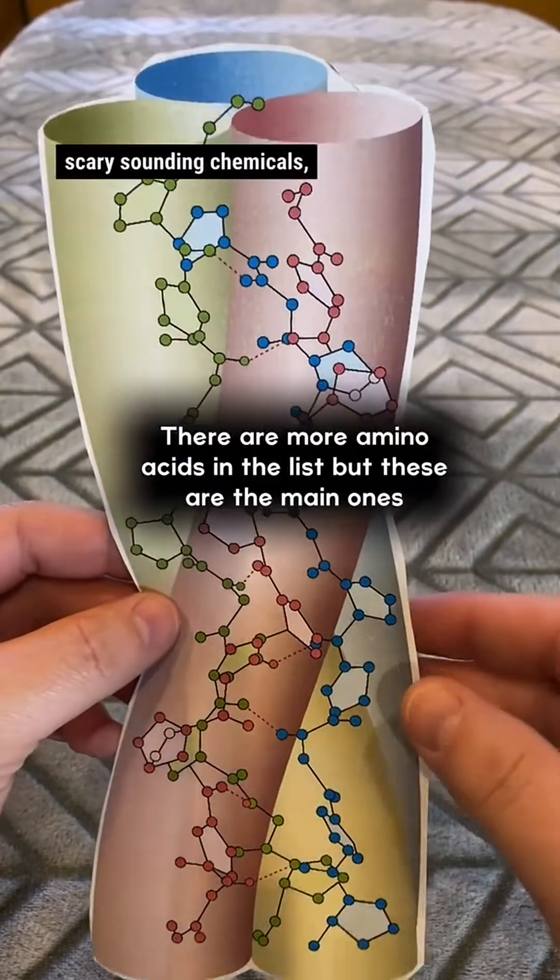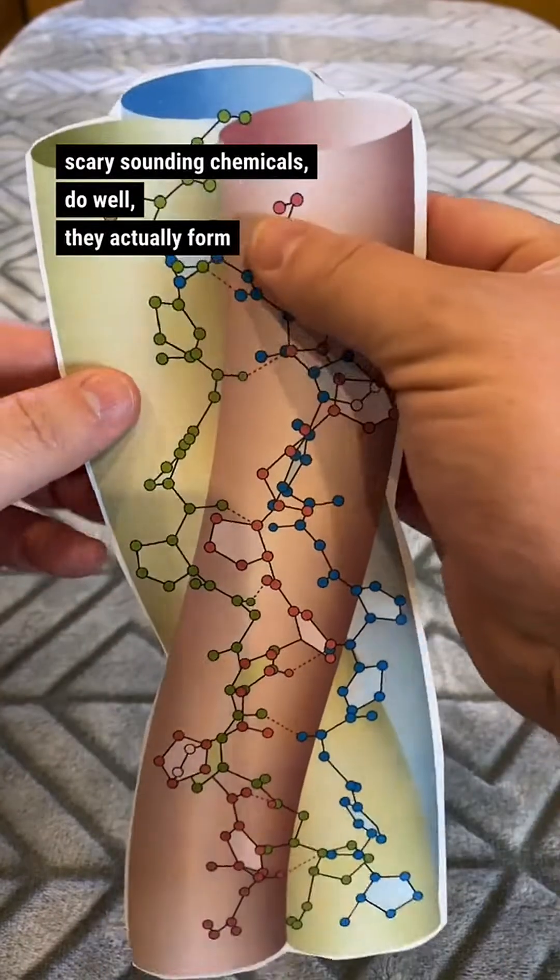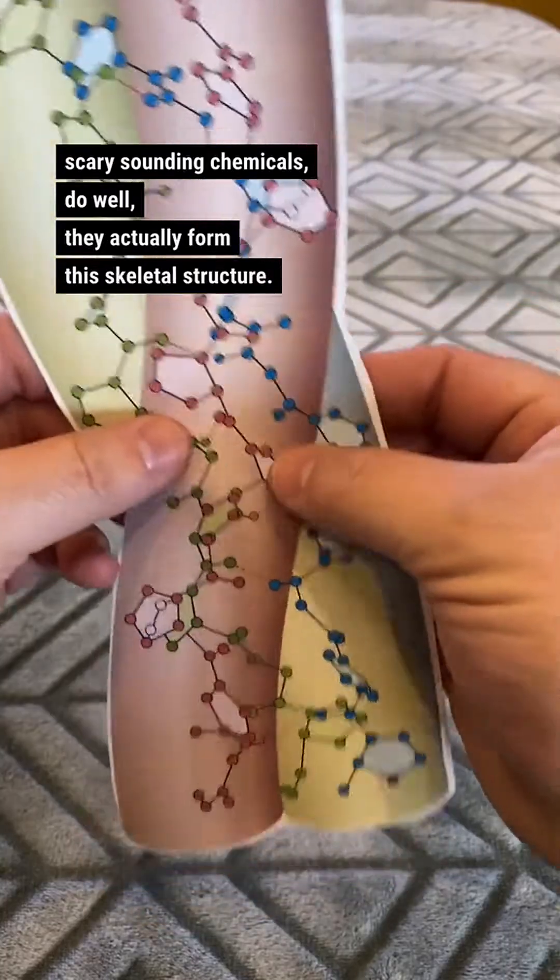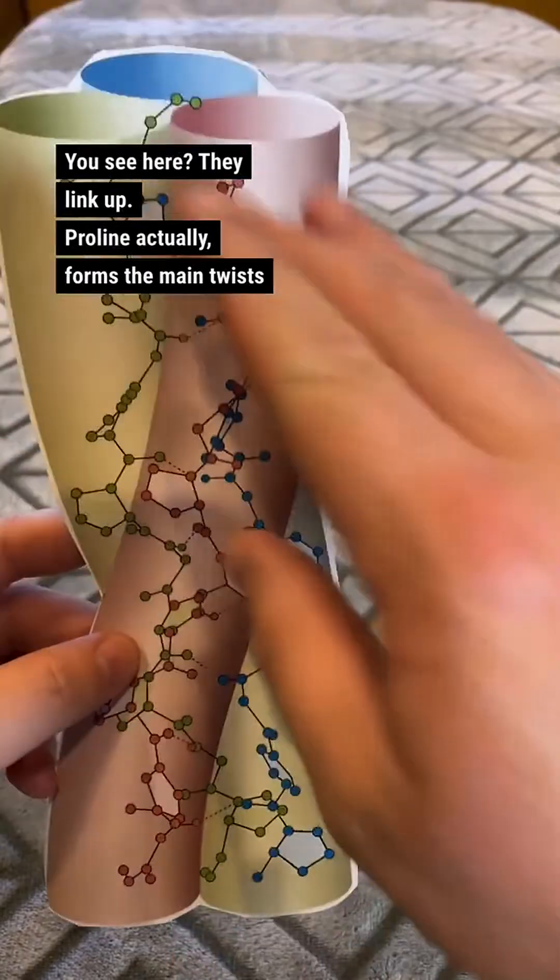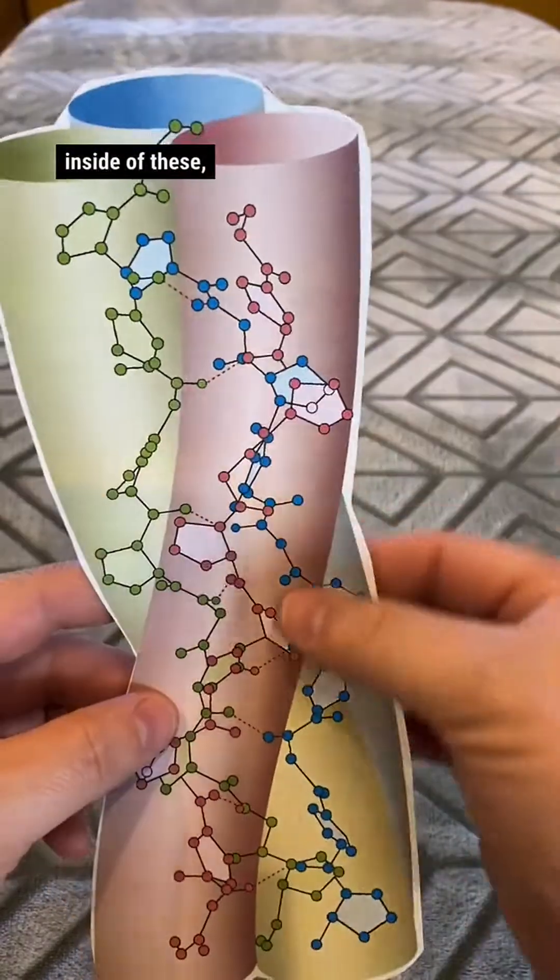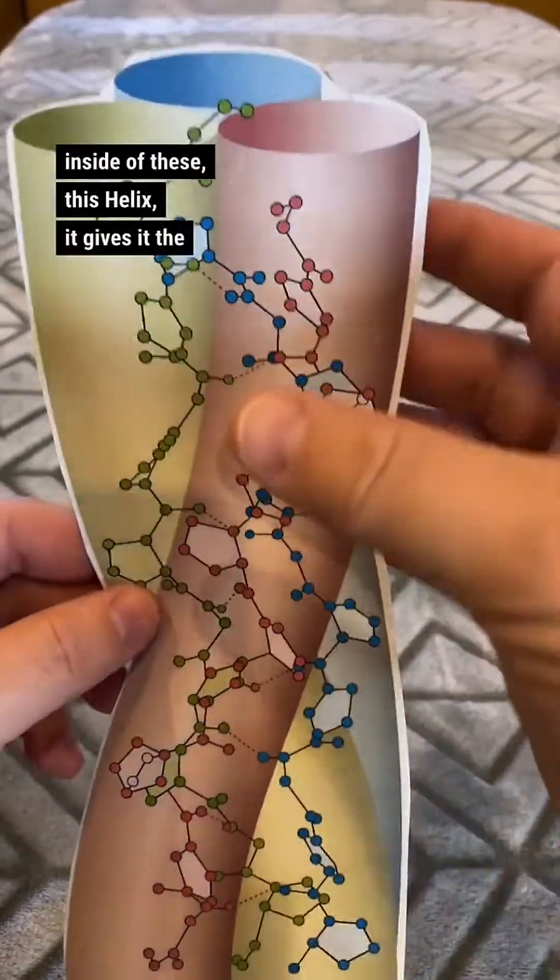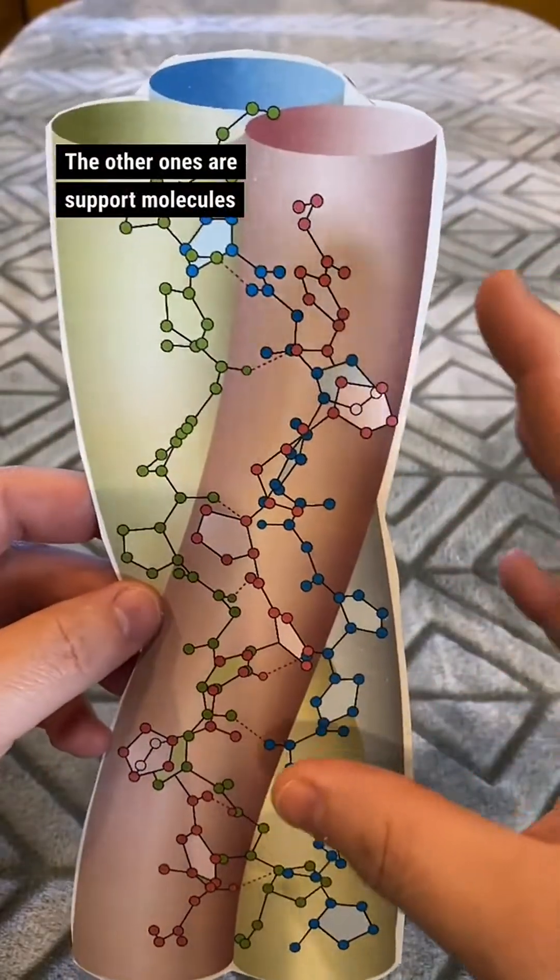So what do those scary-sounding chemicals do? Well, they actually form this skeletal structure you see here. They link up. Hydroxyproline actually forms the main twists inside of this helix. It gives it the ability to twist. The other ones are support molecules.